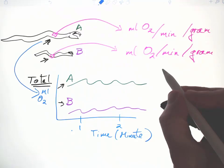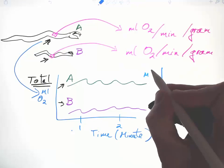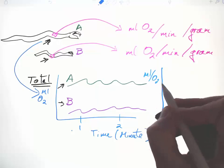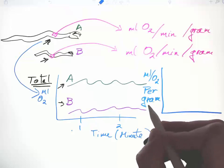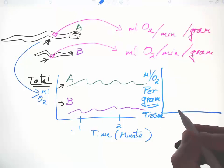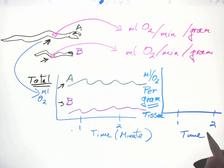In contrast, if we look at the milliliters of oxygen use per gram of tissue, that will be much more similar between the two snakes if they're of the same species. Snake A per gram is using about the same as snake B.